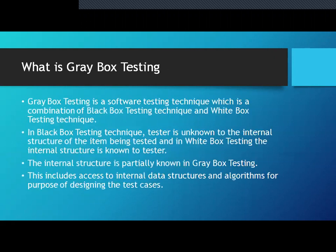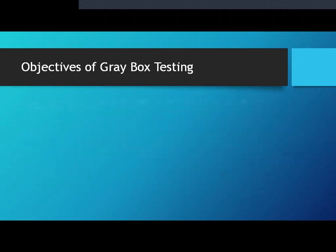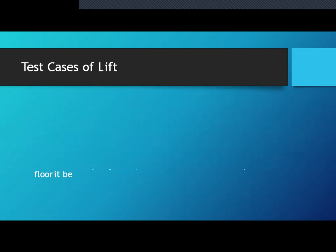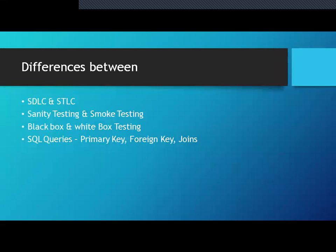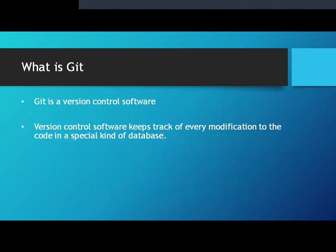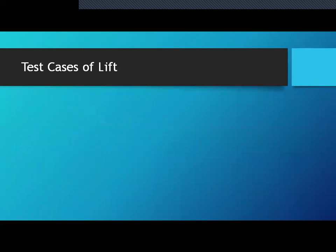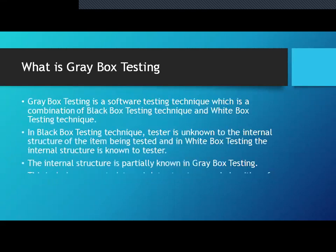In testing, various questions on gray box testing were asked — what are the objectives of gray box testing? Then test cases, live scenarios of lift and elevator. Then what is Git and Git commands, Git basics. Then the differences between SDLC and STLC, sanity testing and smoke testing, black box testing and white box testing — all these differences were asked. Then SQL queries were covered like primary key, foreign key, the difference between primary and foreign key, and what are joins — inner join, outer join. Now we'll look into the detail of all these interview questions and I'll cover the answers as well.